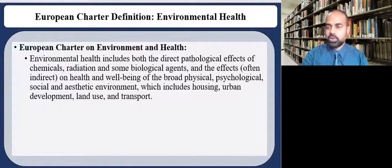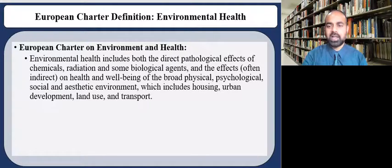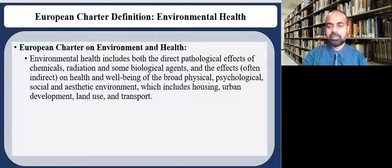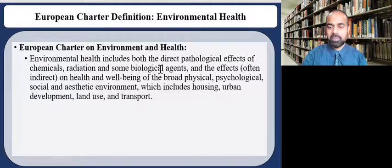Adding on to these definitions, the European Charter on Environment and Health states that environmental health includes both the direct pathological effects of chemical, radiation, and some biological agents, and effects often indirect on health and well-being of the broad physical, psychological, social, and aesthetic environment, which includes housing, urban development, land use, and transport. Here you can again see those specific factors — chemical, radiation, biological — and where these factors are affecting humans.